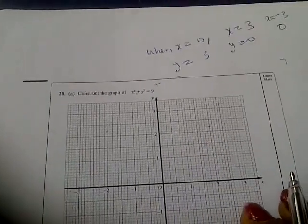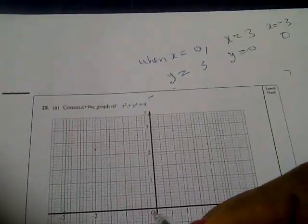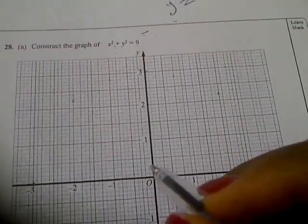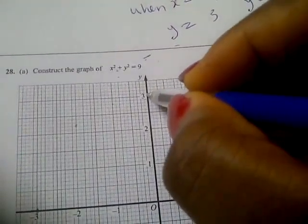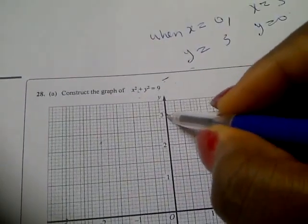So with those points, let's look at our graph. When x is 0, y would be 3. We'll go to 3 and make a point there.